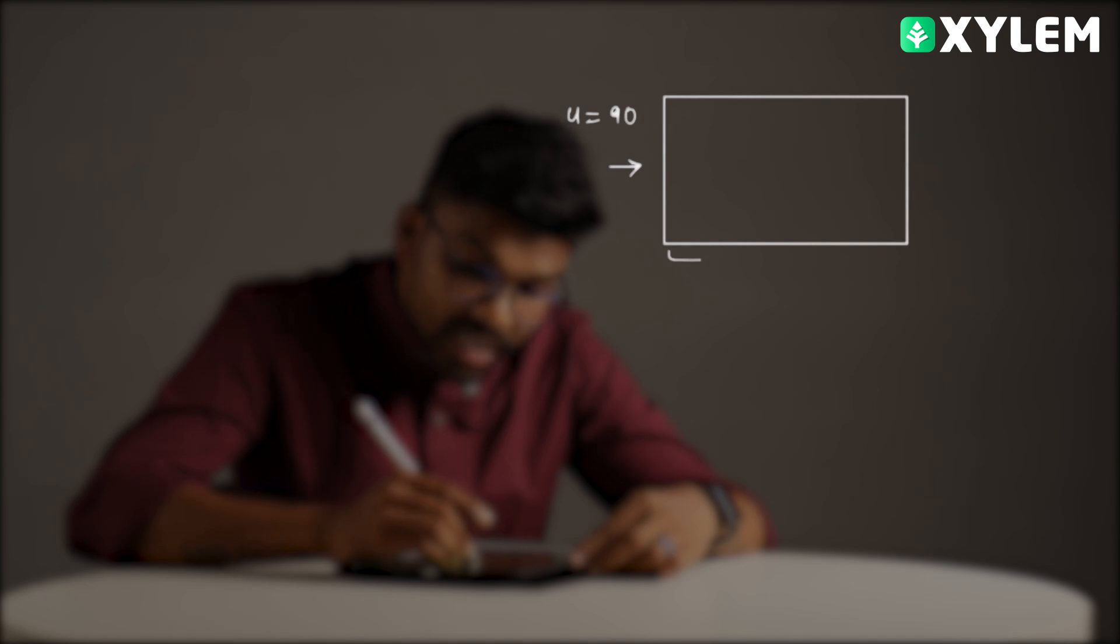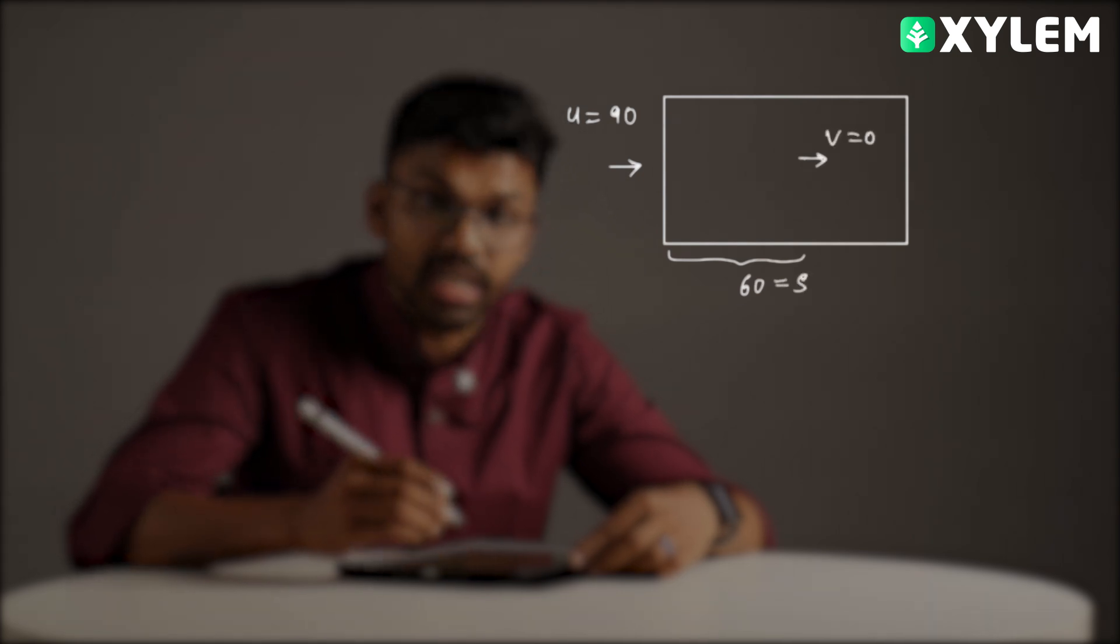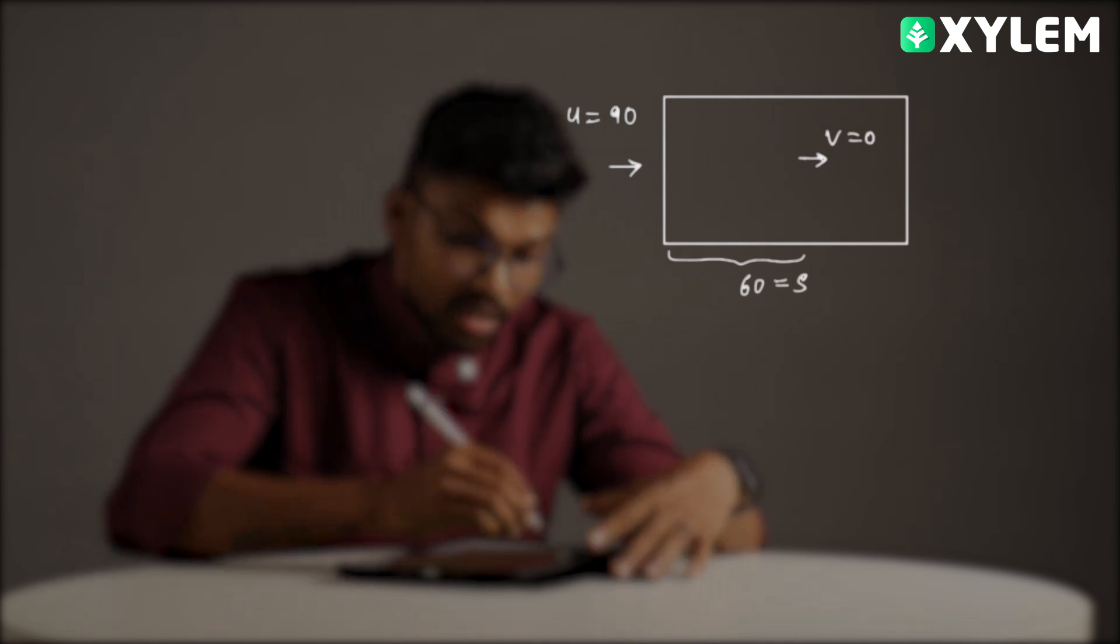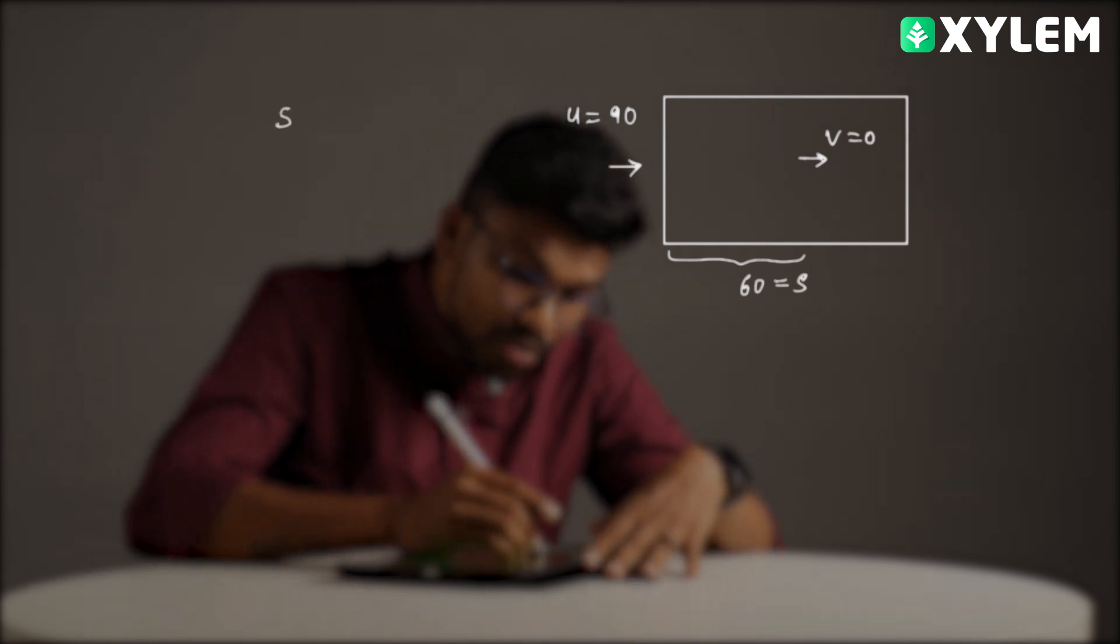I am talking about a wooden block. A bullet will enter a wooden block. Initial velocity, 90 meter per second. Question: A bullet is 90 meter per second. A bullet is 60 cm travel.